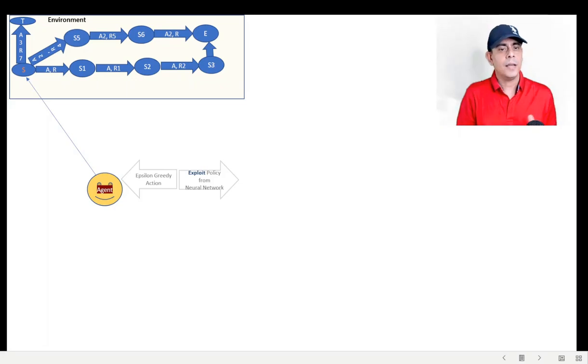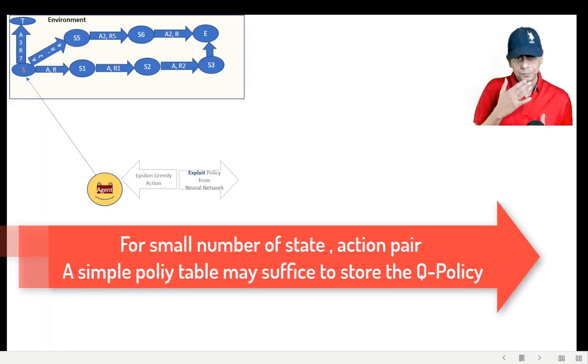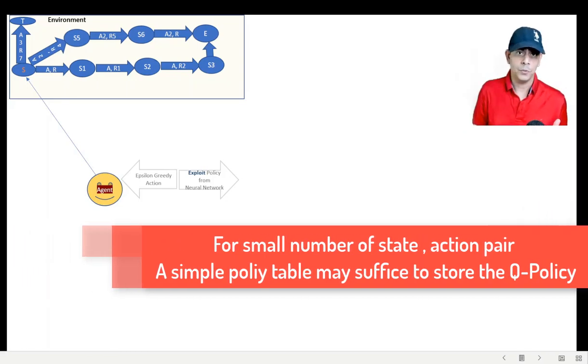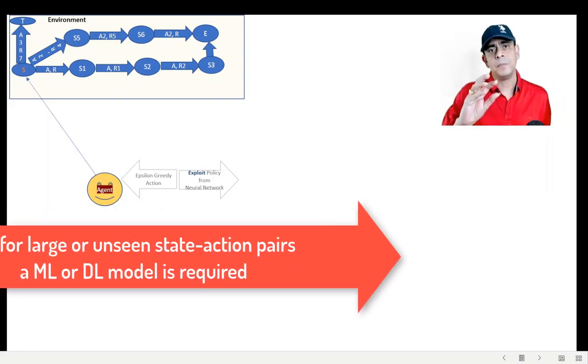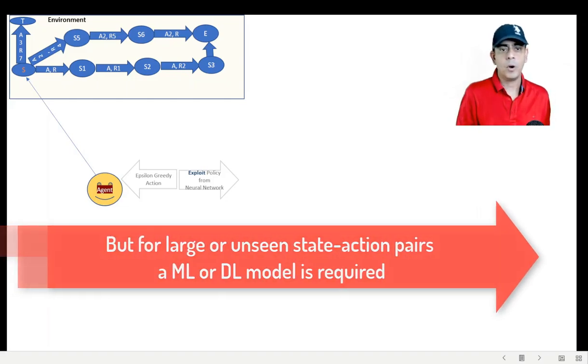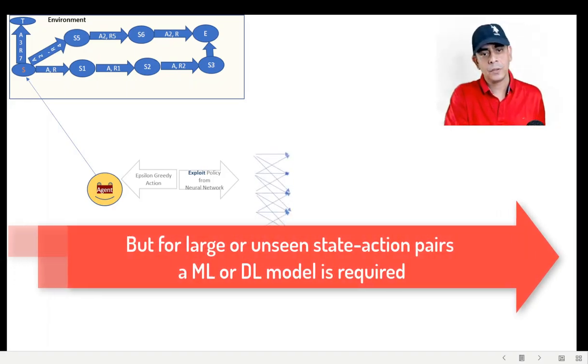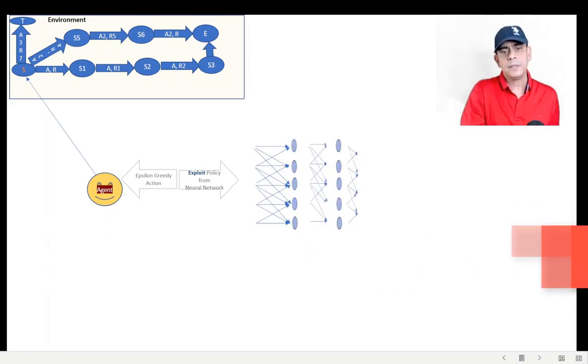Now this Q-value table is actually possible when the steps are finite and all state-action pairs are known. But in real-life scenarios, there would be many scenarios where there would be unknown states and unknown actions which have to be taken. That's why, moving away from the table, you would need a probabilistic model, a machine learning model. Because it could be very complex, a neural network is preferred here.